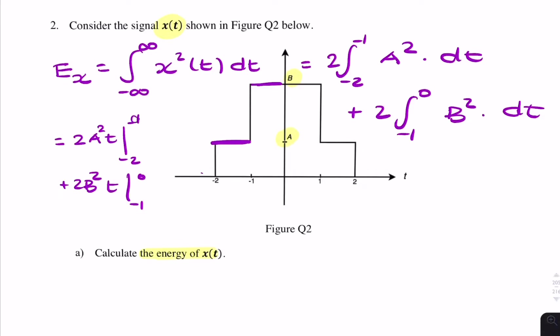Substituting the limits, we get E_x equals 2(a² + b²). So that's the final answer for part (a). We simply took the amplitudes of x, squared them, and integrated from minus infinity to infinity.